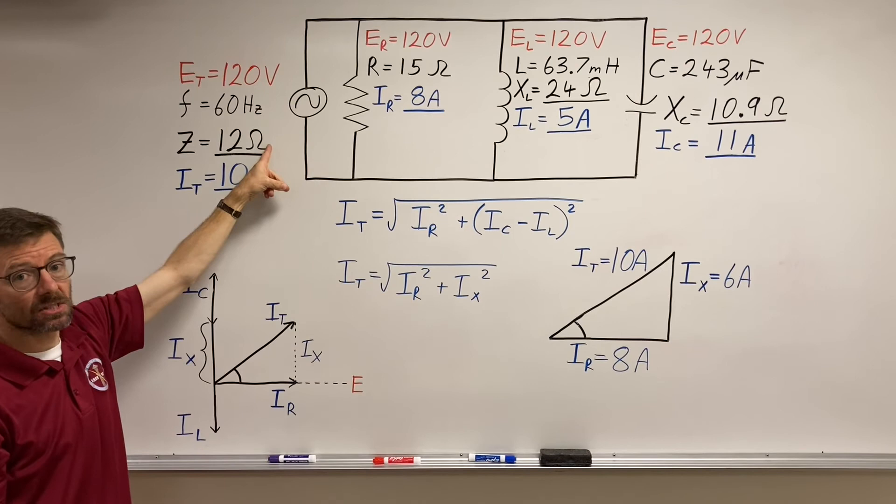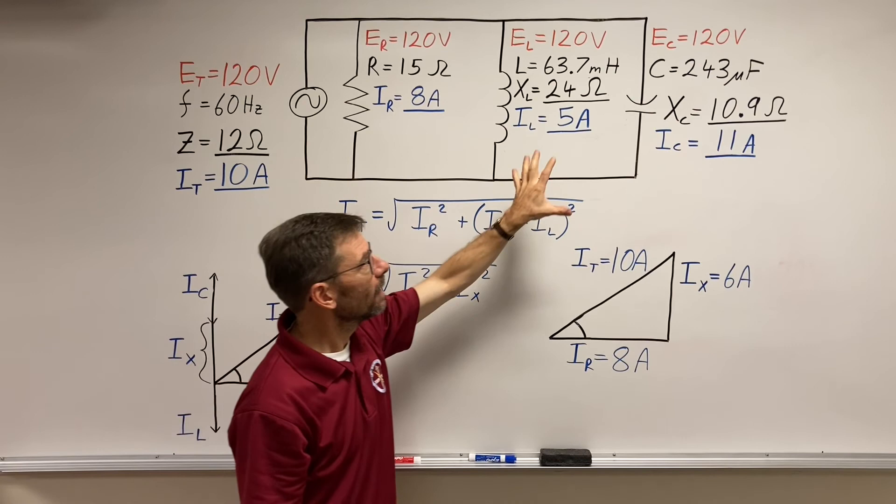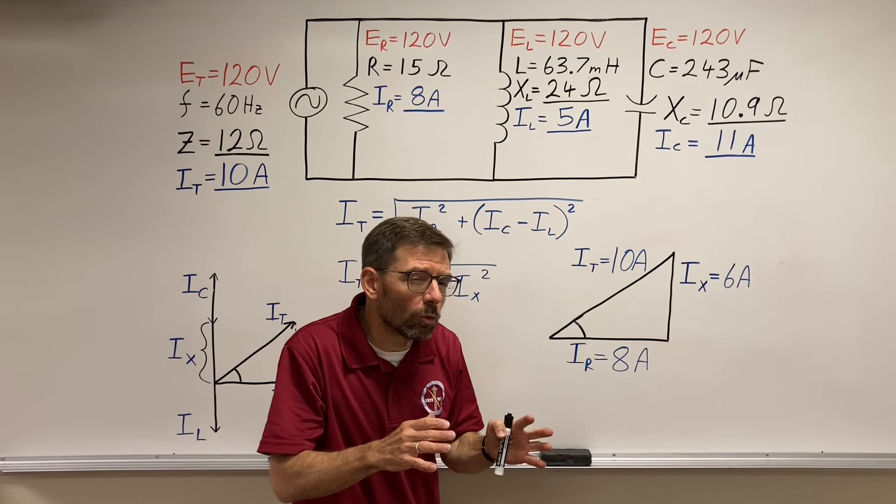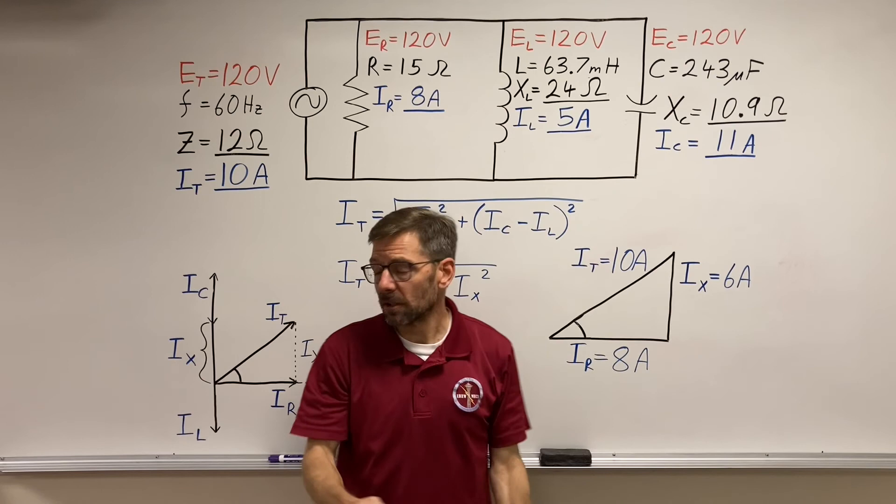And you'll notice this impedance needs to be smaller than my resistive branch. Doesn't necessarily need to be smaller than either one of these. They could be off a little, or both of them could be less. It's kind of breaking the rules we had before, but not really. Because if I just had one of these, that wouldn't be the case. This impedance would be a lot smaller. But the two are working together.